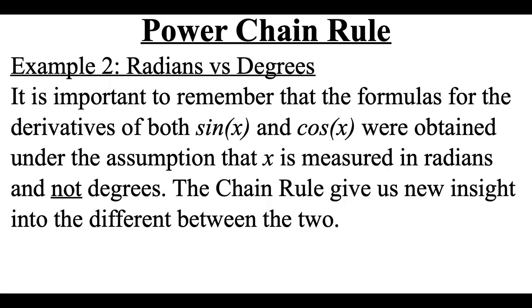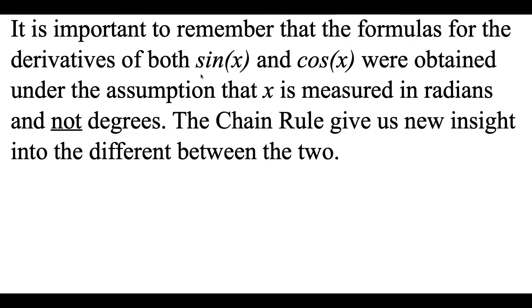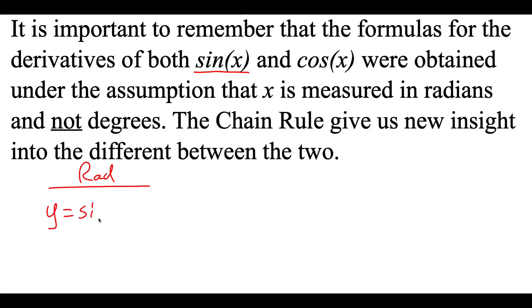One more example we're going to look at involves doing some trig. When we're doing trig in calculus, we always want to make sure we're working in radians. The derivatives for both sine and cosine were obtained under the assumption that x values are being measured in radians and not in degrees. Using the chain rule can help us recognize why we'd want to do things that way. When measuring in radians, with y equals sine of x, the derivative is just cosine of x.